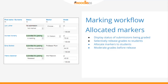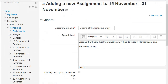Two new assignment features in Moodle 2.6 allow teachers to display the marking workflow status of an assignment and to allocate specific markers to specific students. This is also useful for reviewing or moderating grades.